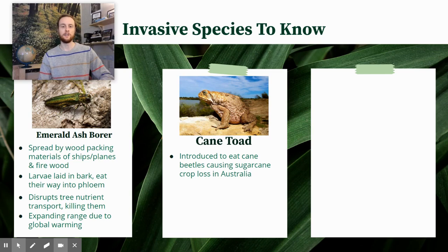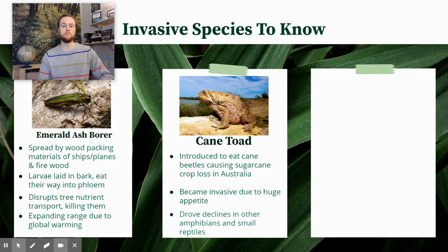It was brought in to try to limit agricultural losses, but it expanded and basically now covers all of Australia, whereas it was initially introduced to a much smaller region. It's a really aggressive feeder, and so it's outcompeted other amphibians and a lot of small reptiles. We've seen many of those populations decrease in Australia due to the voracious feeding habits of the cane toad.